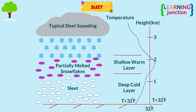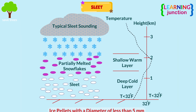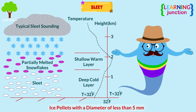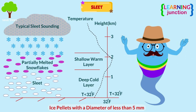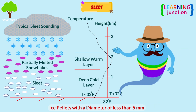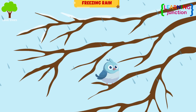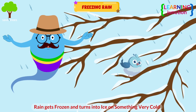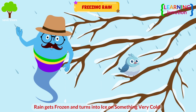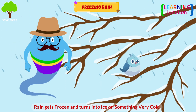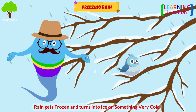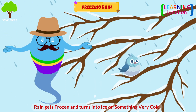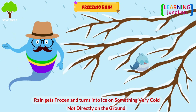Sleet: when transparent ice pellets with a diameter of less than 5 mm become precipitated, then it's called sleet. Freezing rain: in this one, the rain falls on the Earth, gets frozen and turns into ice on something very cold, not directly on the ground.